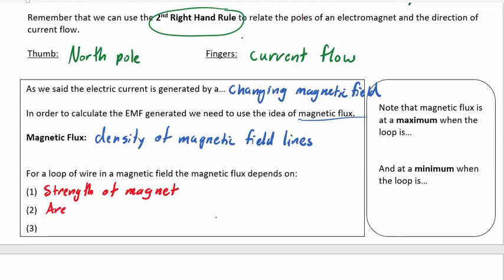But the second one is the area of the loop. You can imagine that the larger the loop is, the more field lines it will catch, the more field lines will go through it.